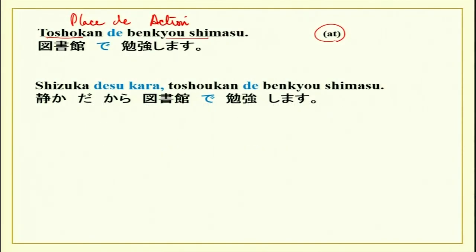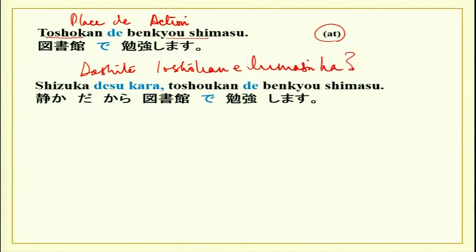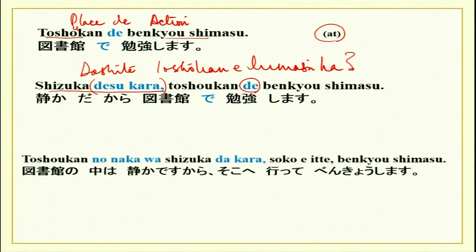In conversation you can ask, doushite toshokan e ikimasu ka? The reason given is shizuka desu kara — it is quiet. Desu kara toshokan de benkyoshimasu. Why do I study there? Because it is quiet. The full complete sentence is: toshokan no nakawa shizuka dakara, soko e ikite benkyoshimasu. I go over there and then I study. The reason given is it is shizuka, it is quiet. This is how you use particle de.